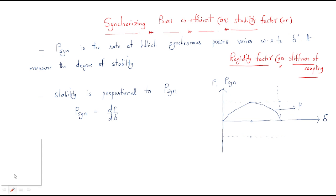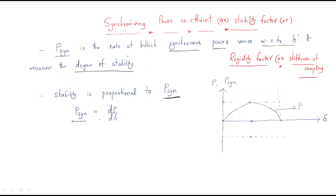The synchronizing power coefficient is represented as P_sync, and it is the rate at which synchronous power varies with respect to δ (delta). It is defined as how the synchronizing power varies with respect to δ, and it measures the degree of stability. Stability is generally proportional to the synchronizing power.